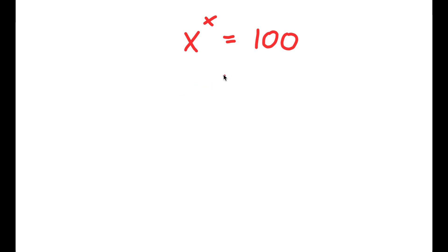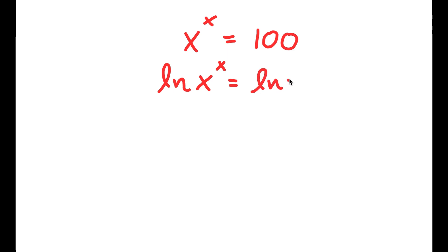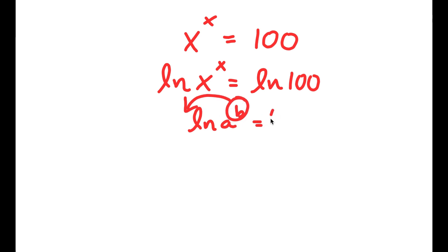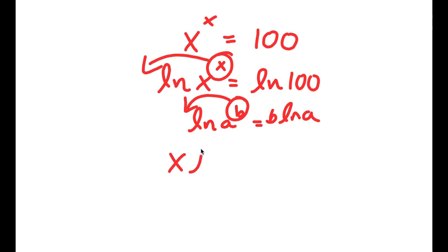In this problem, I have x to the power of x is equal to 100. I'm going to start by taking the natural log on both sides. So I have ln of x to the power of x is equal to ln 100. Using the rule that ln of a to the power of b equals b times ln a, I can move x to the front and get x times ln x is equal to ln 100.